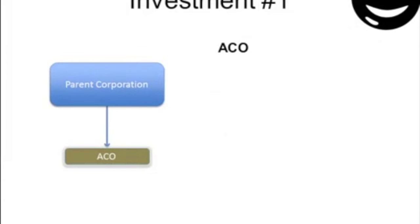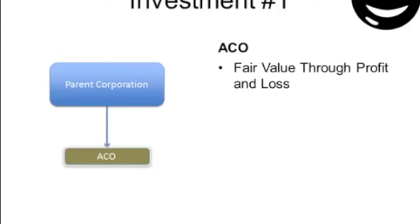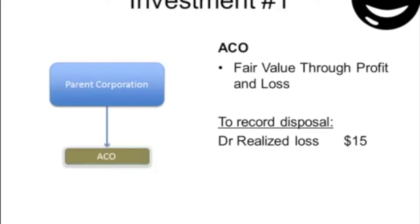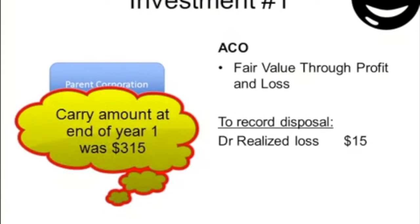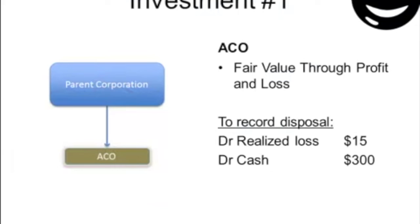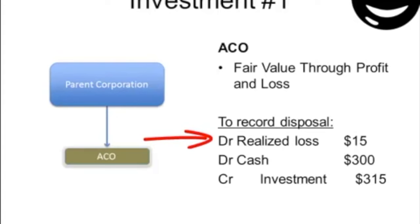A-CO, which had been previously classified as fair value through profit and loss, was sold during the year for $300,000. Even though the amount was the same as the initial investment in year one, the investment account had been adjusted to fair value for the appreciation of the investment to $315,000. Thus, the difference between the carrying amount and the ultimate proceeds resulted in a $15,000 loss in year two.